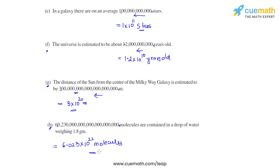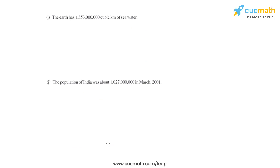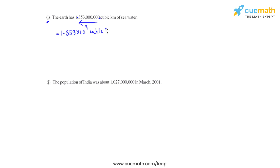We move on to the last two parts of the same question. Part I says that the Earth has so many cubic kilometers of seawater. We convert the number into standard form by getting the decimal between 1 and 3, moving it from its current position towards left by 9 places. That gives us the standard form 1.353 × 10⁹ cubic kilometers.